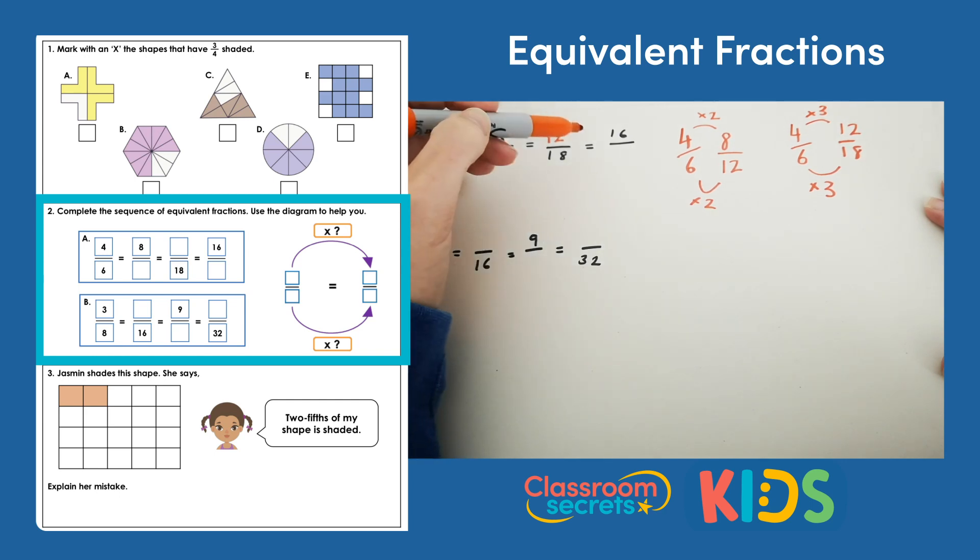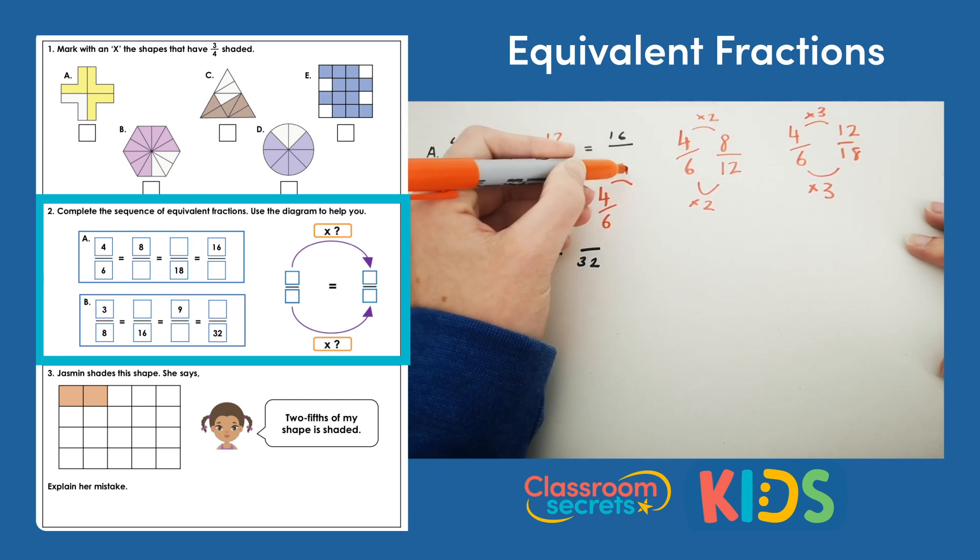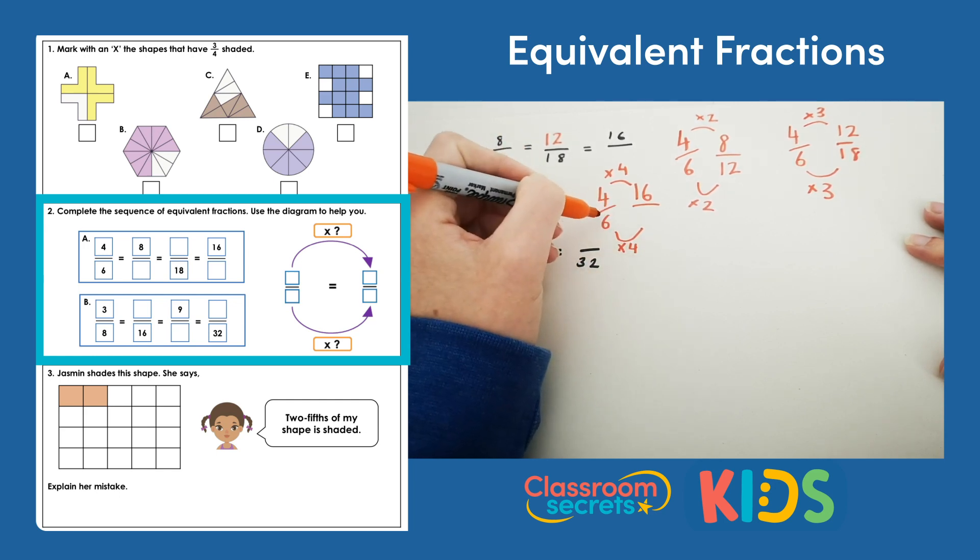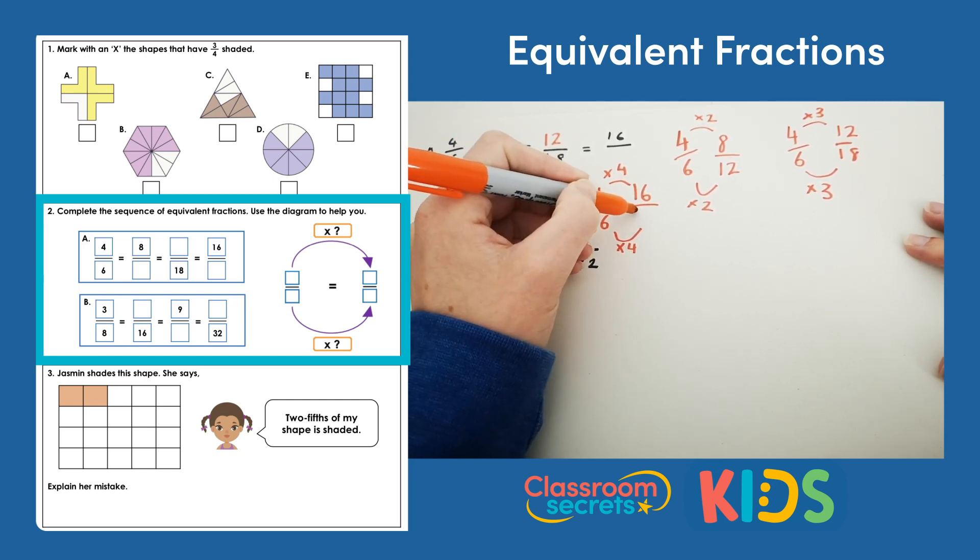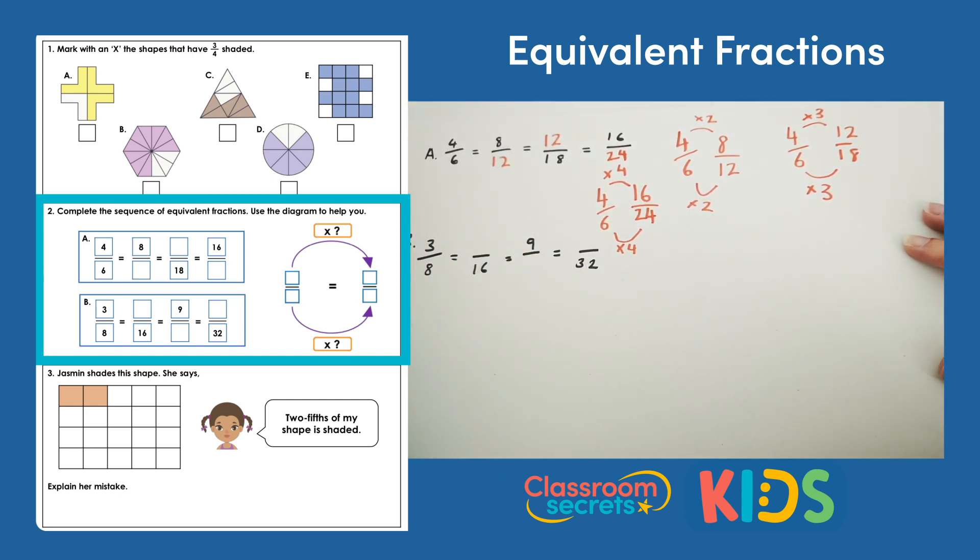Finally then, what we need to do is find the fraction where the numerator is 16. So again if we look at 4 sixths, to make 4 into 16 we multiply by 4. So we must multiply 6 by 4. 6 multiplied by 4 is 24. So the sequence goes 4 sixths, 8 twelfths, 12 eighteenths and 16 twenty-fourths.